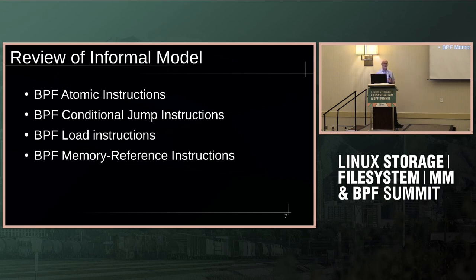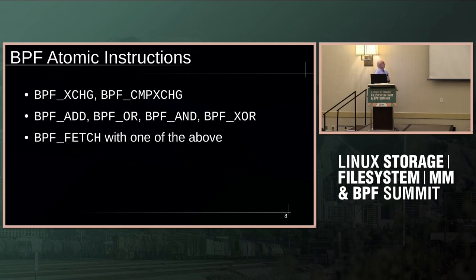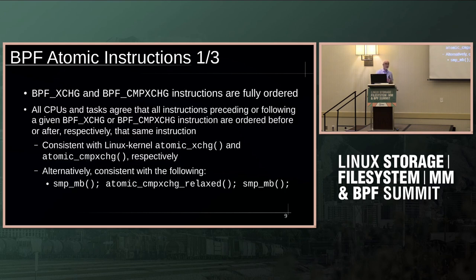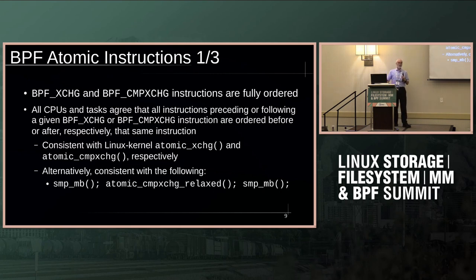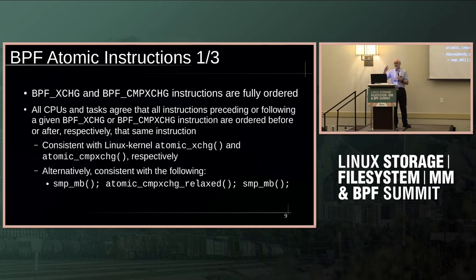We have BPF atomic instructions. Some of those do ordering. Conditional jump instructions have a weak form of ordering. Also load instructions in conjunction with jump instructions, and memory reference instructions. For the atomic instructions, we'll do them in three groups. The first group is exchange and compare exchange. An exchange instruction or a successful compare exchange has full ordering — all CPUs agree on what happened before and after that atomic instruction, plus we have transitivity.